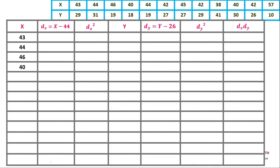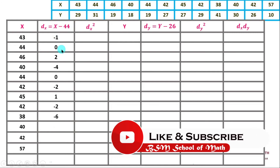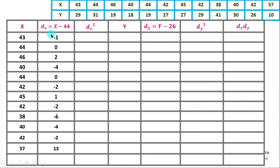Let's look at the given data. First row: 43 minus 44 equals minus 1. Then 44 minus 44 equals 0. Then 46 minus 44 equals plus 2. We have calculated these dx values. We will substitute the values for dx — up to 2 for dx.